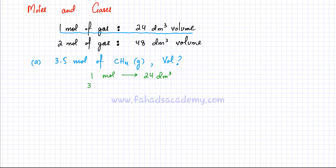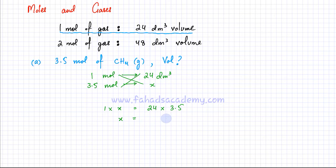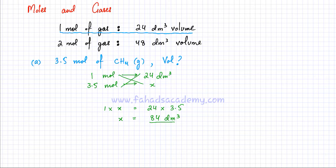If I have 3.5 moles of gas, it should occupy a volume x. Using the unitary method and cross multiplication: 1 × x = 24 × 3.5, so x comes out to be 84 dm³. That's the answer. By using ratios, I knew one mole occupies 24 dm³, so 3.5 moles occupies 84 dm³.